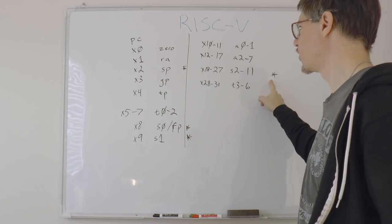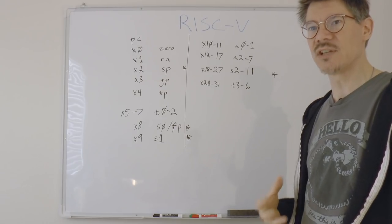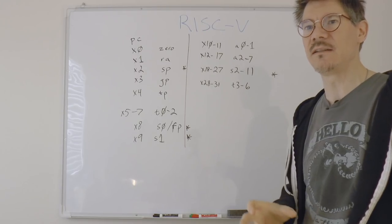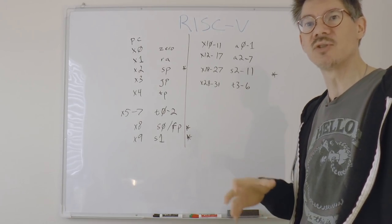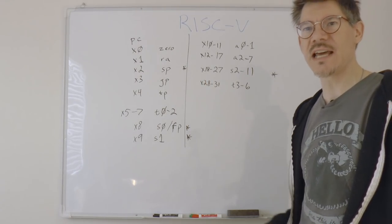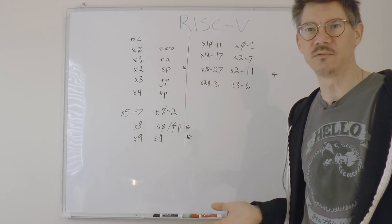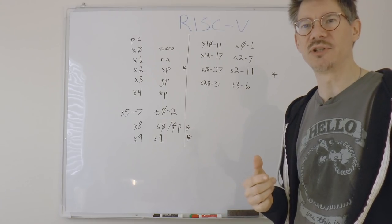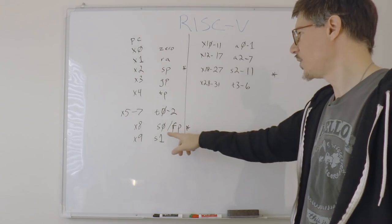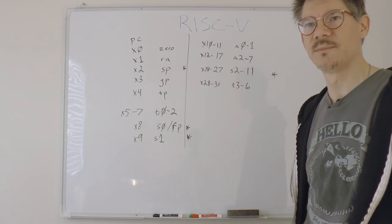Now, the registers that I've marked with star are callee saved registers, and what that means is that if a subroutine wants to use these registers for something, they have to save the original state of the register, and then just before they return, they have to restore that state. Which makes sense for a stack pointer, because of course if a subroutine needs to push things onto a stack for whatever reason, it needs to make sure that the stack pointer is restored just before it returns to its caller. So the same thing is true of these saved registers. That's why they're called saved registers.